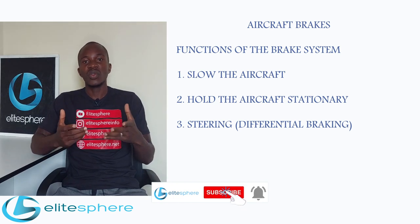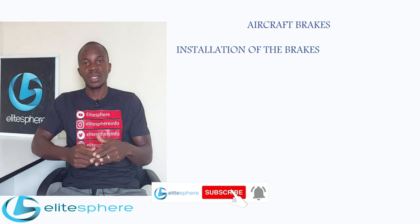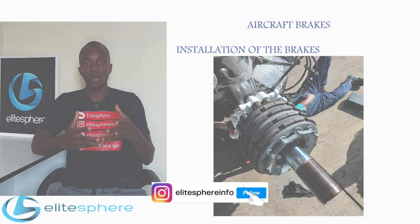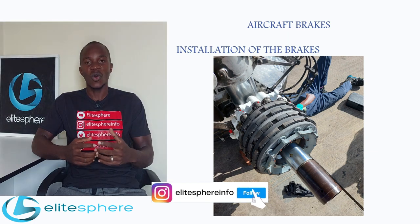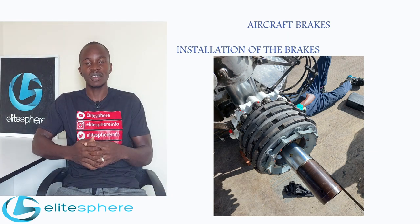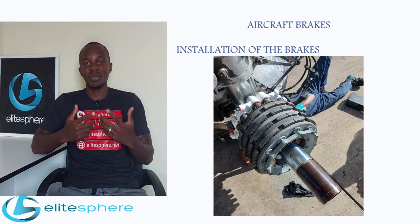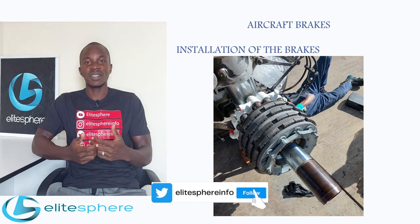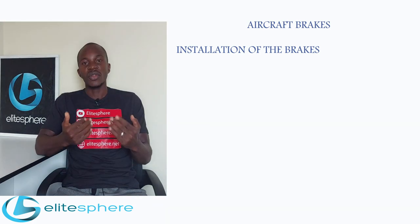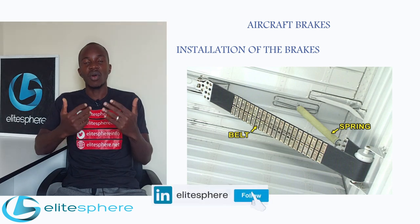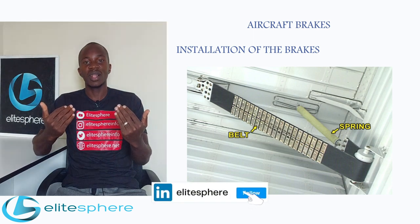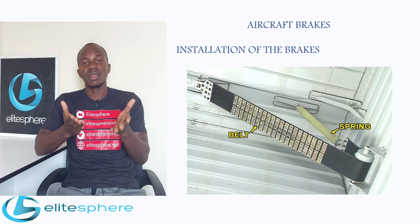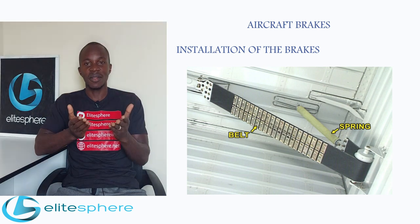Aircraft brakes are installed on the main wheels of the landing gear. Every single wheel has a brake unit installed for that particular wheel. The nose gear or the tail gear of an aircraft doesn't have a brake unit installed. For aircraft that have retractable landing gears, the nose gear has a panel or strip inside the wheel well that stops the rotation of the nose gear when the landing gear is retracted.